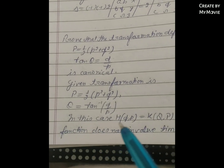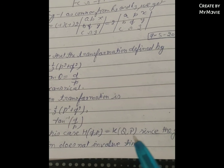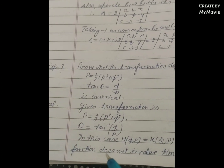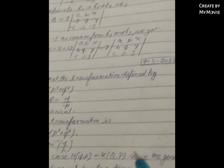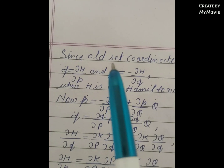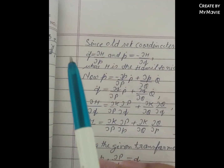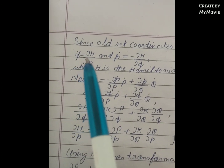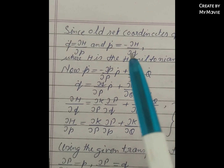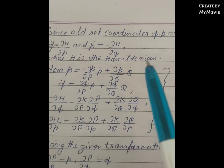Since the generating function does not involve time, H(q, p) = K(Q, P). Since the old set of coordinates q and p are canonical, q̇ = ∂H/∂p and ṗ = -∂H/∂q, where H is the Hamiltonian. This is equation 1.